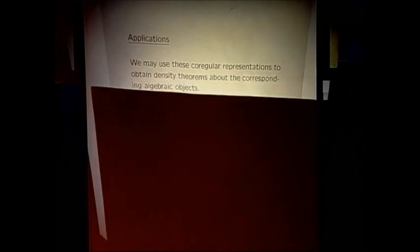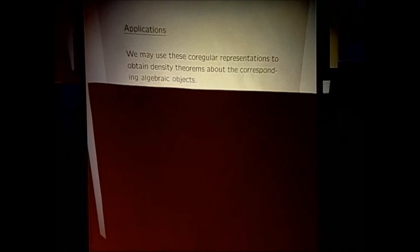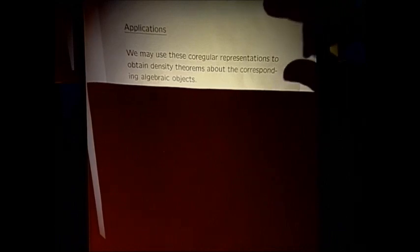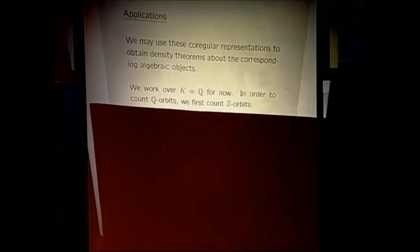I want to talk about some of the applications today, and tomorrow I'll get into what these things say. Just as in the prehomogeneous case, we can use these co-regular representations to understand the arithmetic statistics of the objects being parametrized — in this case elliptic curves and models of those elliptic curves. Let's fix the field k = Q for now, though the same ideas apply to any number field. Since these are geometric objects, we usually think of them over the rational numbers.